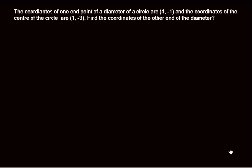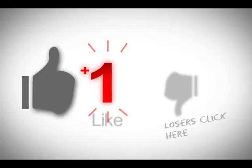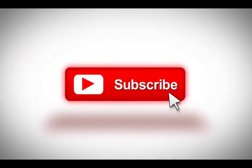Hi everybody, welcome to Agamath. Today's question: the coordinates of one end of the diameter of the circle are (4, -1) and the coordinates of the center of the circle are (1, -3). Find the coordinates of the other end of the diameter. Before you watch the video, like our channel, subscribe, and click on the bell icon for notifications.